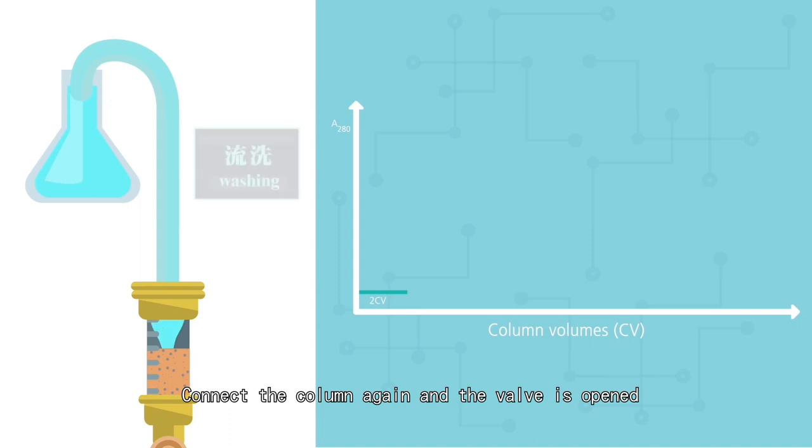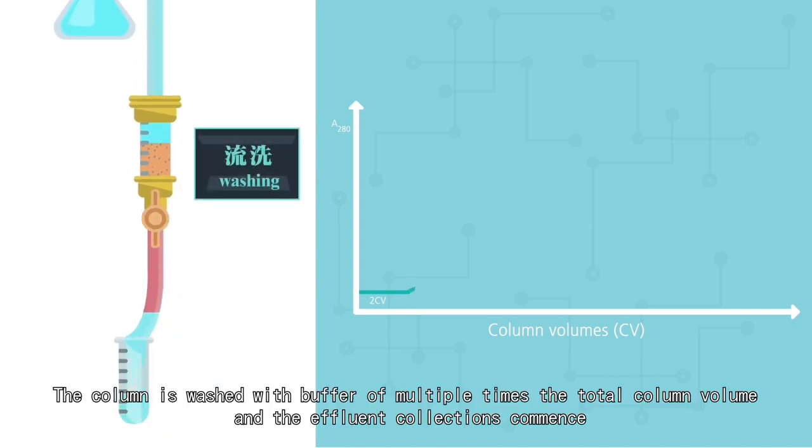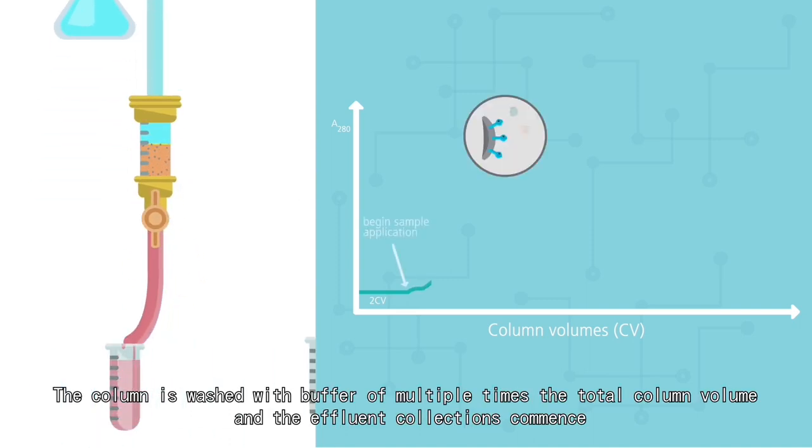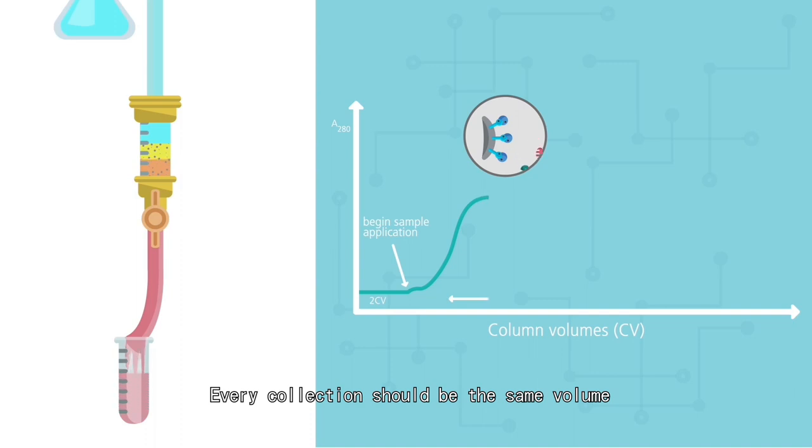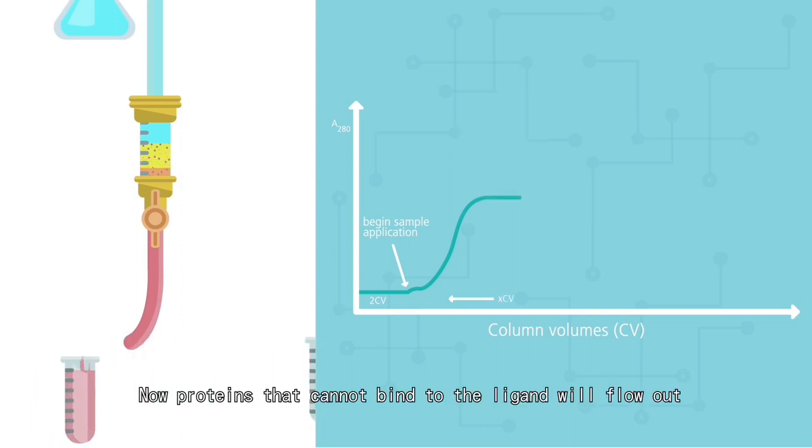Connect the column again and the valve is opened. The column is washed with buffer of multiple times the total column volume and the effluent collections commence. Every collection should be the same volume. Now proteins that cannot bind to the ligand will flow out.